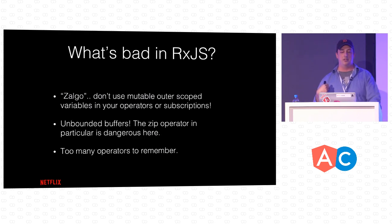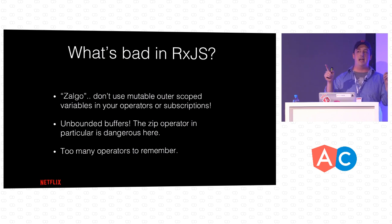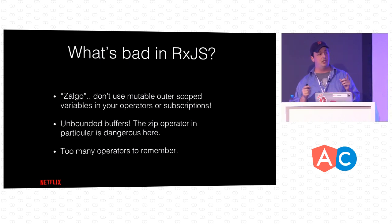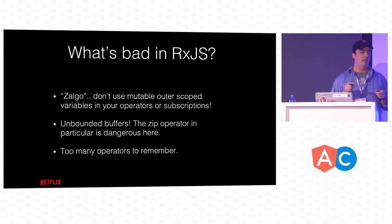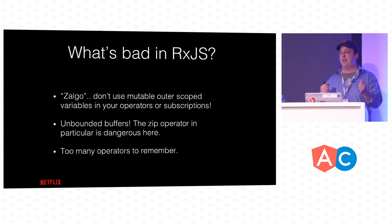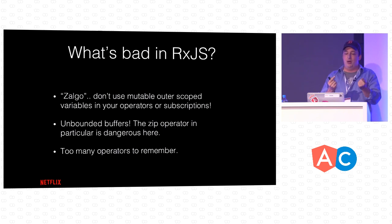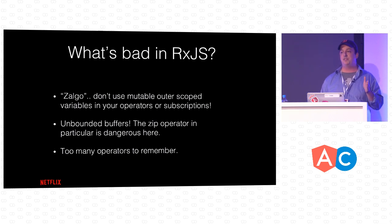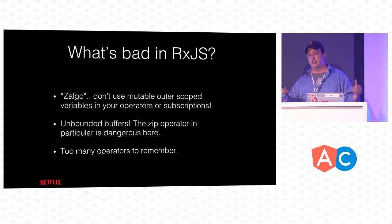Another pitfall is unbounded buffers. Zip is a good example: when zipping two observables A and B, since values arrive over time, if A comes in and B hasn't arrived yet, you have to buffer A's value. If A values are coming in much faster than B values, that A buffer keeps building up and you can run into memory issues.